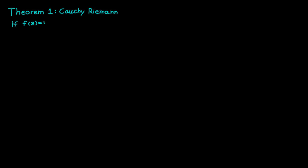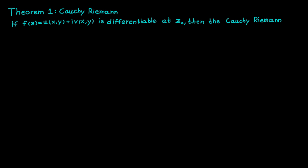The first theorem is about the Cauchy-Riemann equations and tells us that if a function is differentiable at a point in the complex plane, then the Cauchy-Riemann equations — which are the following relations between the partial derivatives of the functions u and v — must hold at the same point. Please note that the other way around is not always true, since a function is not necessarily differentiable only because it fulfills the Cauchy-Riemann equations. We will need to add some more conditions for that to be true.